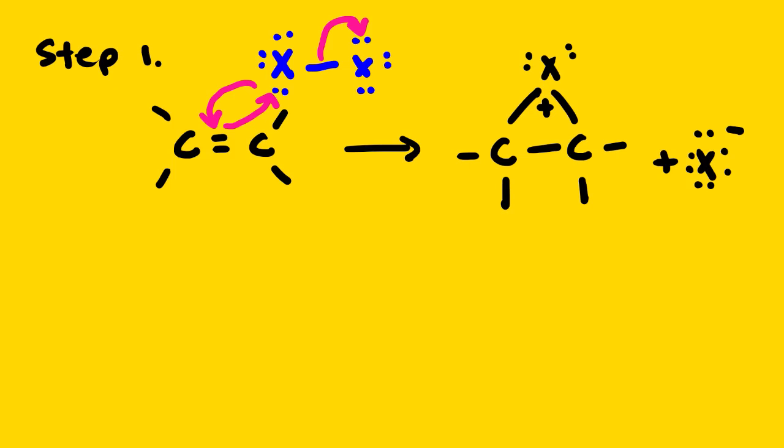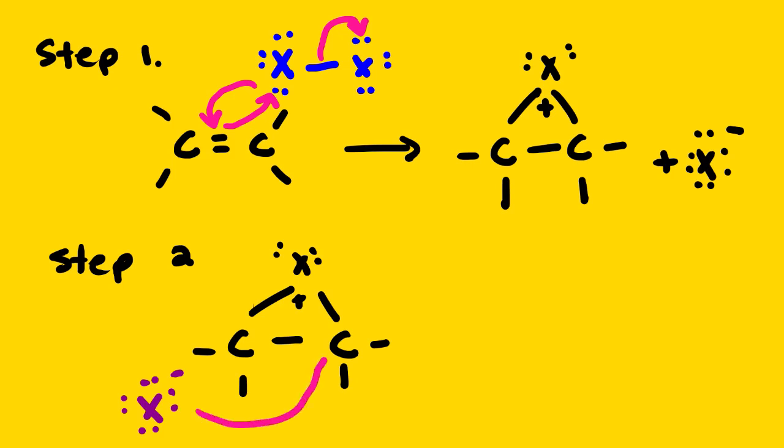Then the next step we take, step number two. By the way, step number two: the halide ion opens the halonium ion. So we have our halonium ion here. It will actually attack from the back. It will actually attack from the back, and then we have movement of electrons here to form